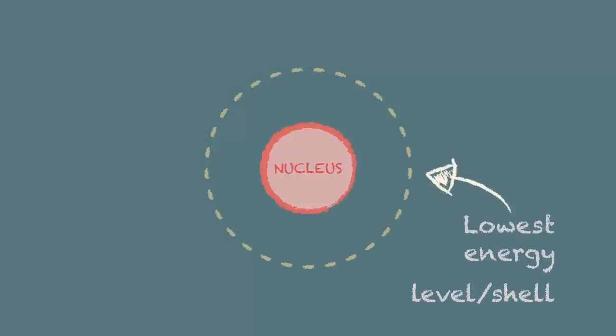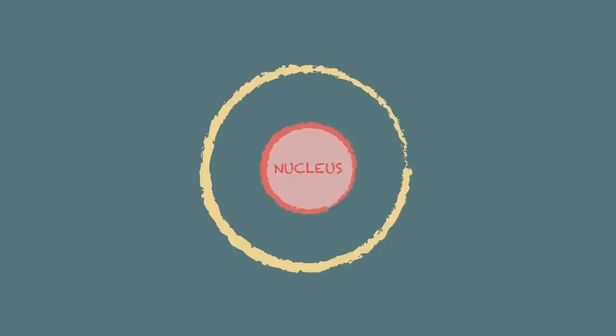In our diagrams the shell nearest the nucleus is going to represent the lowest energy level or shell and we draw a circle to depict each shell. We use a dot or a cross to represent each electron and we'll represent the nucleus by the chemical symbol.